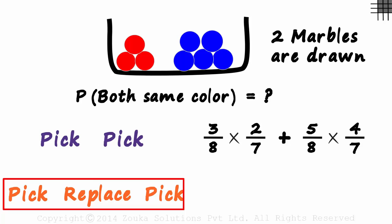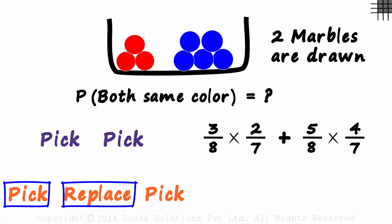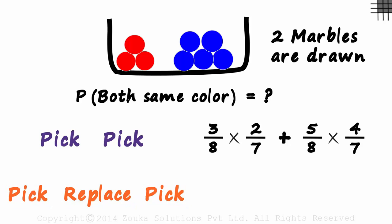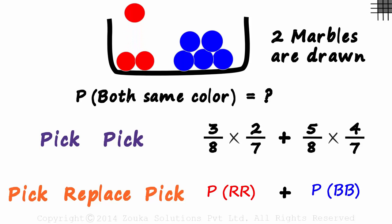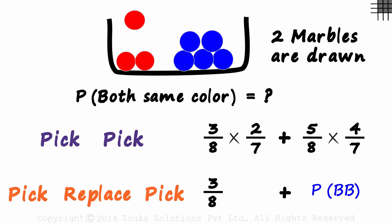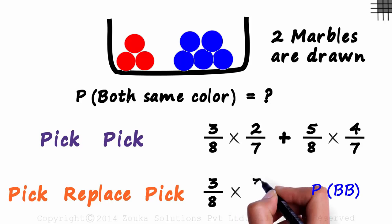Now let's move on to the second case, where we pick a marble, place it back in, and then pick another one. Again there are two sub-cases: both being red or both being blue. The probability of picking a red marble is 3 over 8. We put it back in, so again the probability of picking a red marble is 3 over 8.